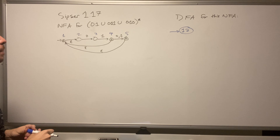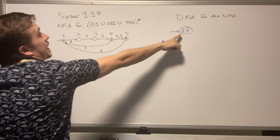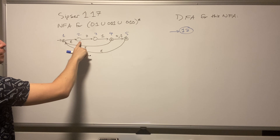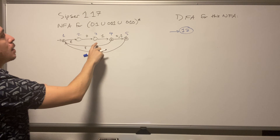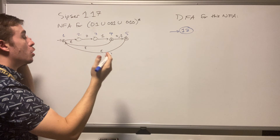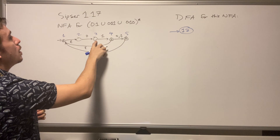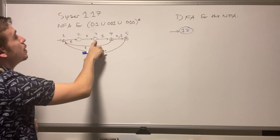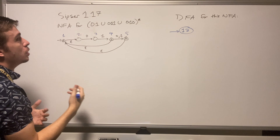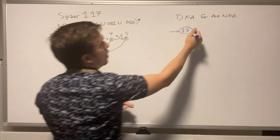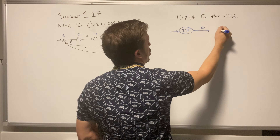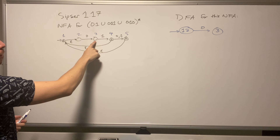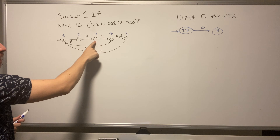If I read a zero from state one-two, the one state doesn't go anywhere on zero, but the two state goes to three. The only state I can reach on that transition is three. Since three has no epsilon transitions coming out of it, the epsilon closure is just state three. So on a zero transition I go to state three.